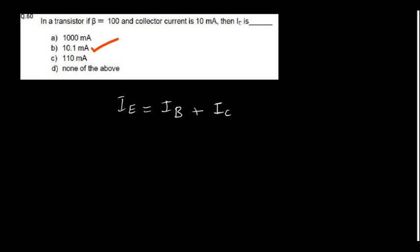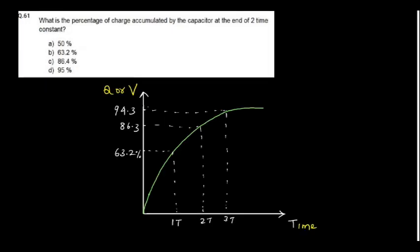What is the percentage of charge accumulated by a capacitor at the end of 2 time periods? After 2 time periods, charge accumulated is 86.4%. After the first time period, it is 63.2%.